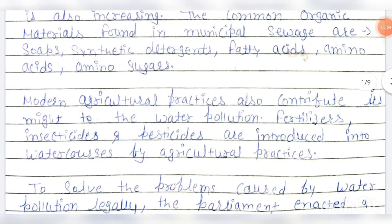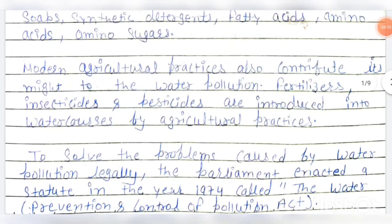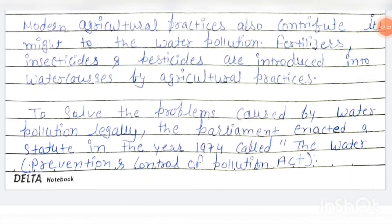Modern agricultural practices also contribute significantly to water pollution. Fertilizers, insecticides, and pesticides are introduced into water courses by agricultural practices. To solve the problem caused by water pollution legally, the Parliament enacted a statute in the year 1974 called the Water Prevention and Control of Pollution Act. We have now studied the object, the definition, and the sources of water pollution.